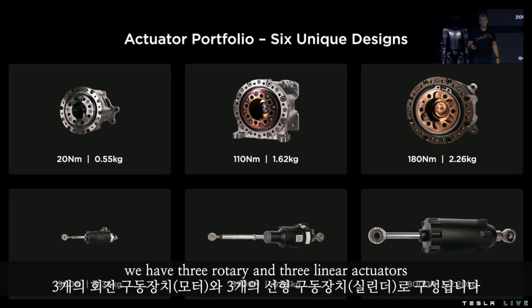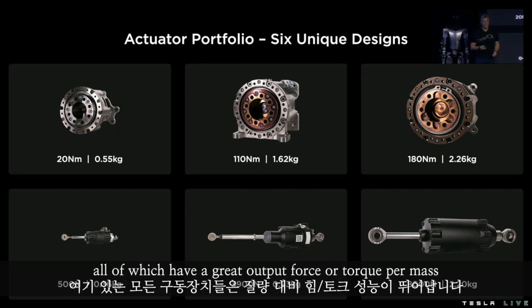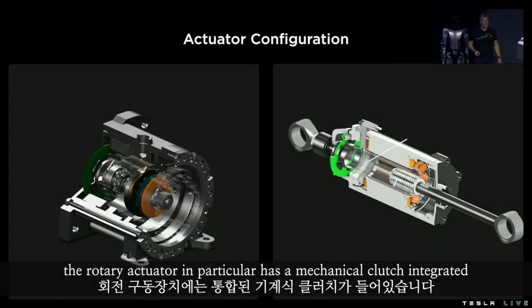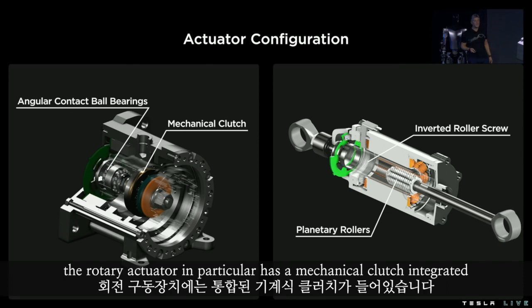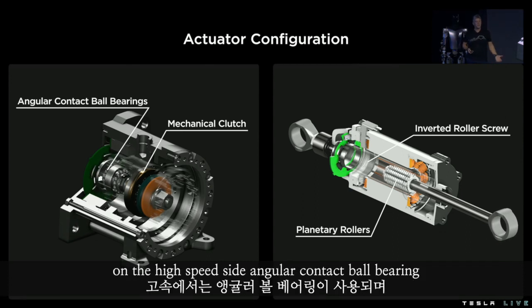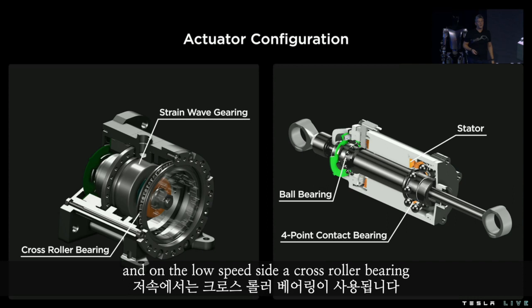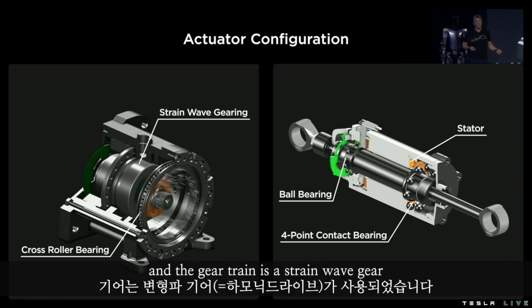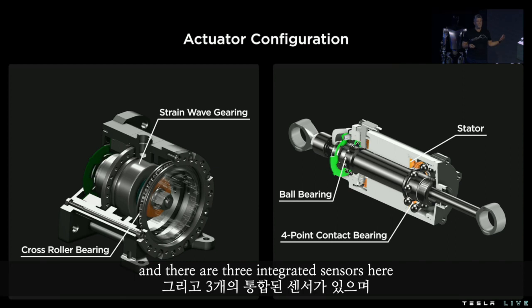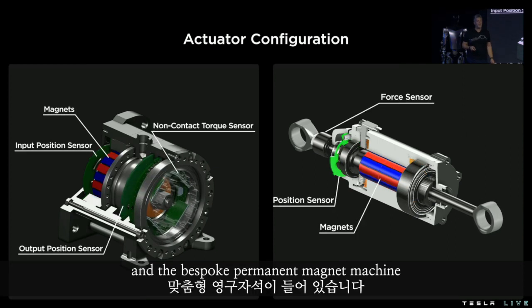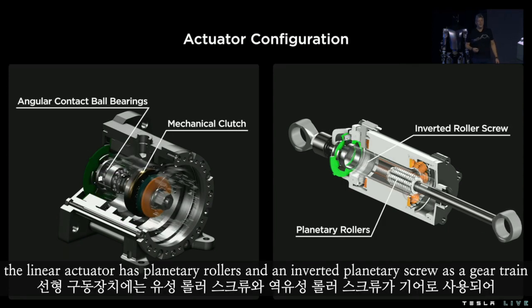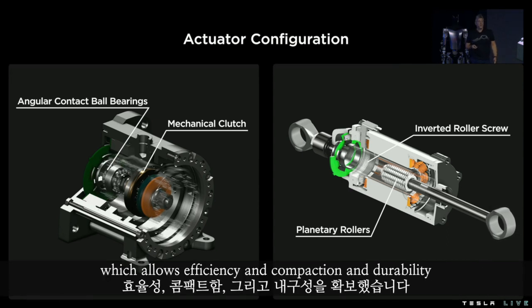We have three rotary and three linear actuators, all of which have great output force or torque per mass. The rotary actuator has a mechanical clutch integrated on the high-speed side, an angular contact ball bearing on the high-speed side, and a cross-roller bearing on the low-speed side. The gear train is a strain wave gear, with three integrated sensors and a bespoke permanent magnet machine.